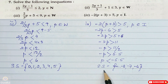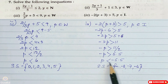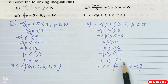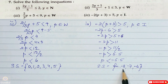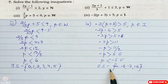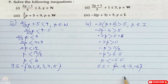Our solution set: p is less than minus 5.5. So we start from minus 6, minus 7, minus 8 and that is infinite, because no upper limit is mentioned.